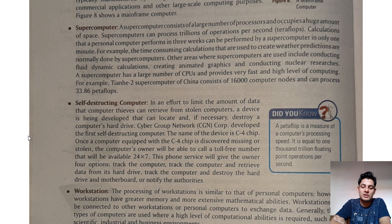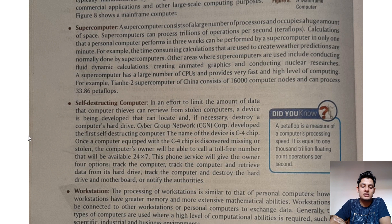Other areas where supercomputers are used include conducting fluid dynamic calculations, creating animated graphics, and conducting nuclear research. A supercomputer has a large number of CPUs and provides very fast, high-level computing. For example, the Tianhe-II supercomputer of China consists of 16,000 computer nodes and can process 33.86 petaflops.